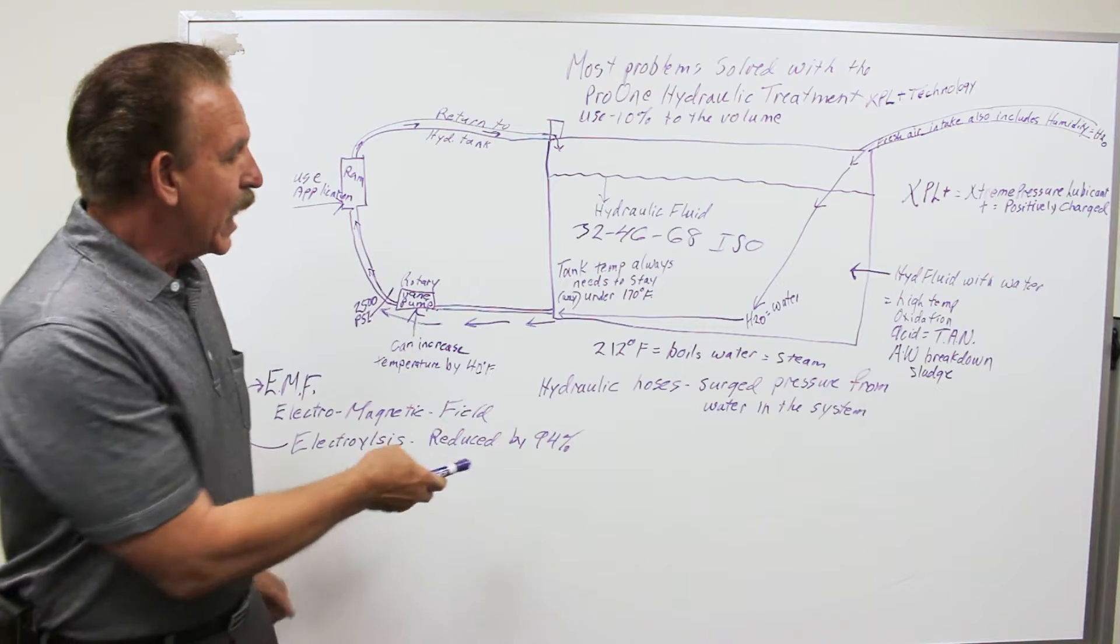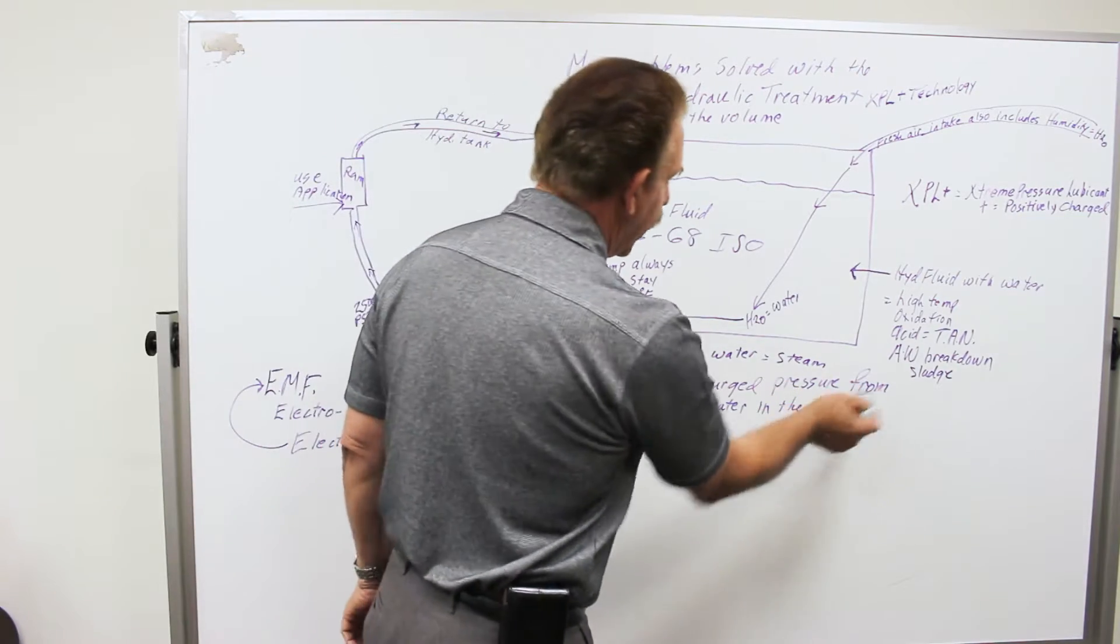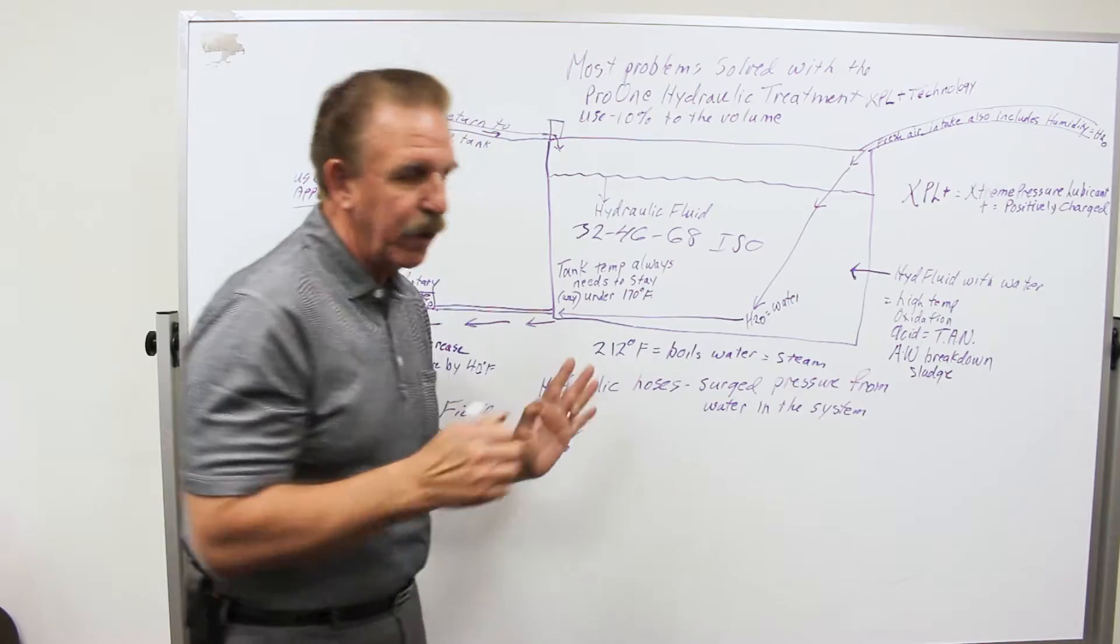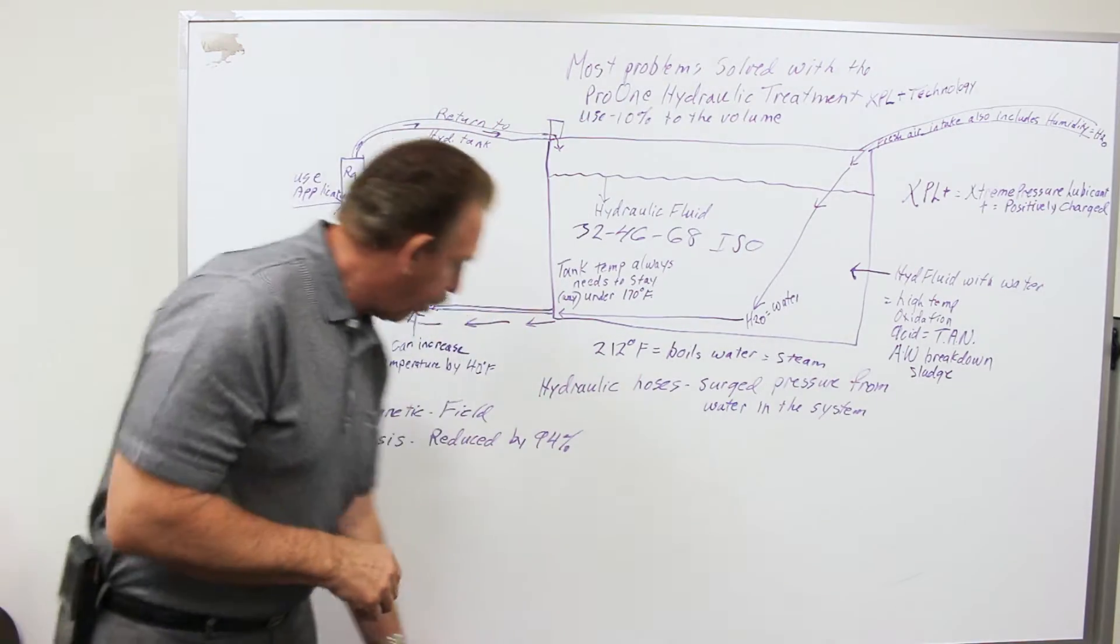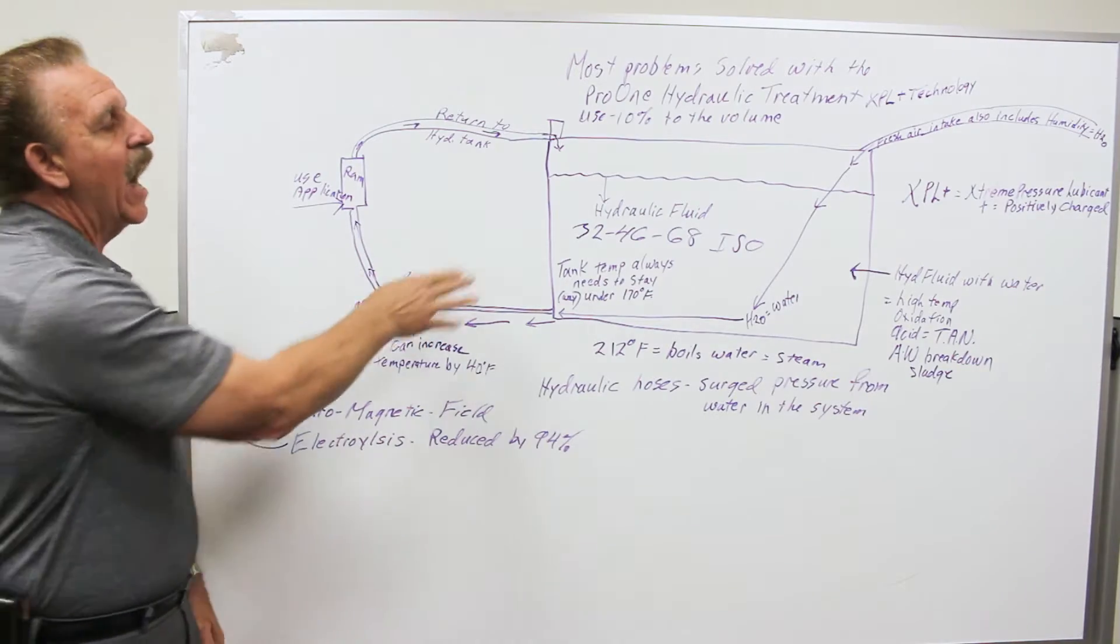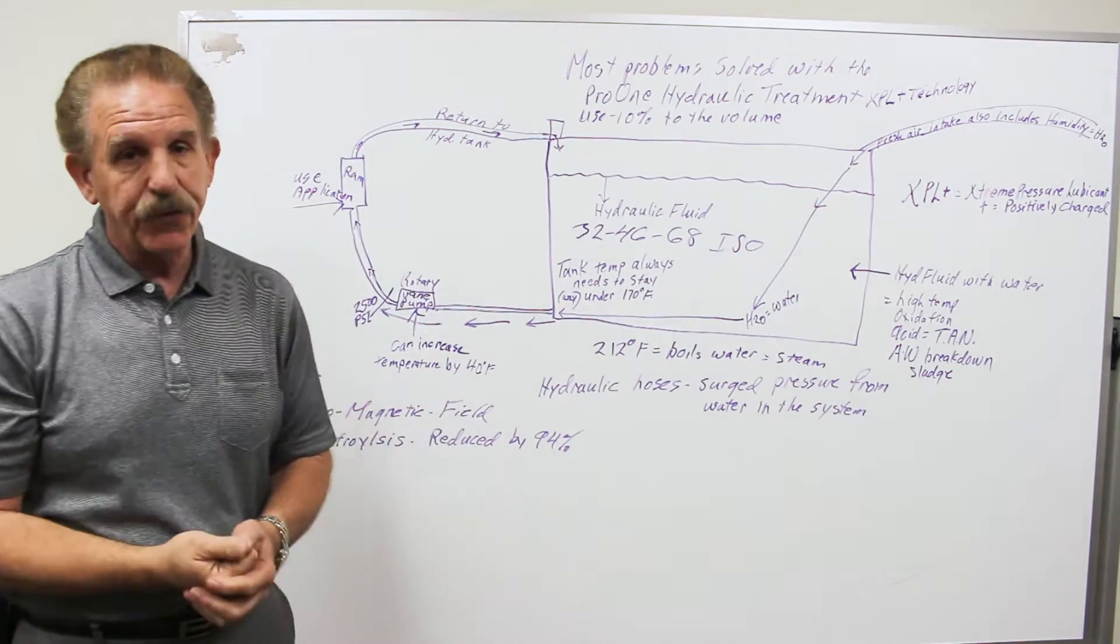Hydraulic hoses surge with pressure from water in the system. Now, here's what's happening. Rotary vane pumps are taking and pressurizing hydraulic fluid, which is designed for it.